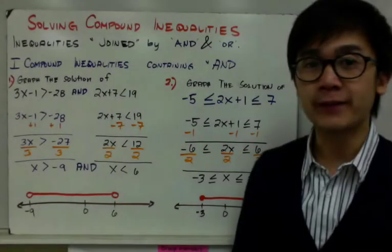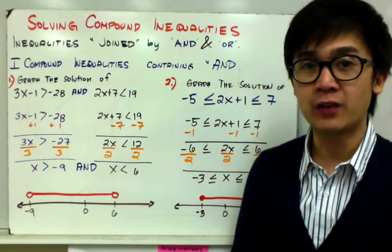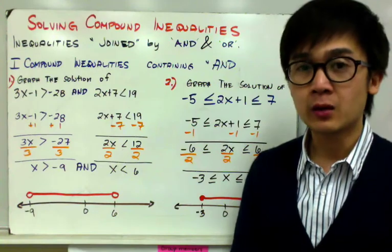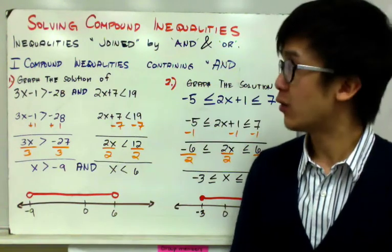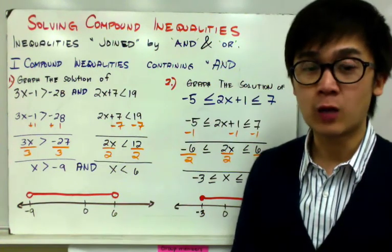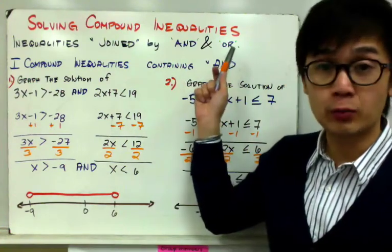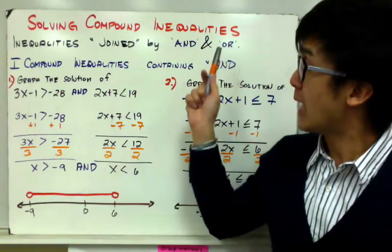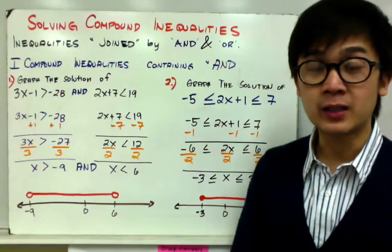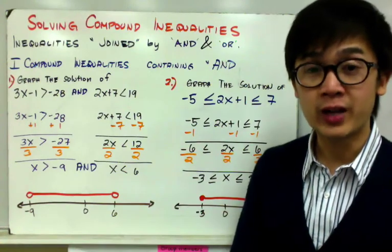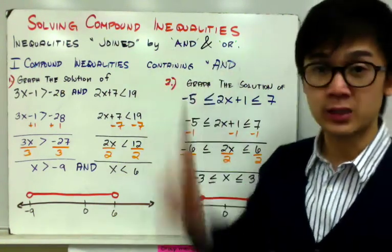Today we're going to solve and graph a different set of inequalities, and we call them compound inequalities. There are two operations on compound inequalities: the AND operation and the OR operation. Compound inequalities are basically pairs of inequalities joined by these operations.